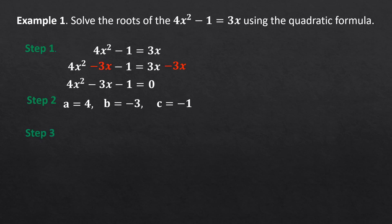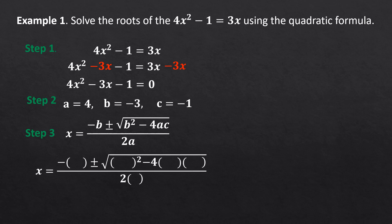Step 3: Use the quadratic formula and substitute the given values. The quadratic formula is X equals negative B, positive and negative square root of B squared minus 4 multiplied by A multiplied by C, over 2 multiplied by A. Substituting: X equals negative of negative 3, positive and negative square root of negative 3 squared minus 4 times 4 times negative 1, over 2 times 4.